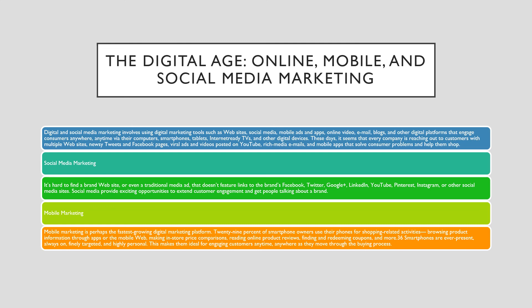Digital and social media marketing involves using digital marketing tools such as websites, social media, mobile ads and apps, online video, email, blogs, and other digital platforms that engage consumers anywhere, anytime via their computers, smartphones, tablets, TVs, and other digital devices. These days, it seems that every company is reaching out to customers with multiple websites, tweets, and Facebook pages, viral ads, videos posted on YouTube, rich media emails, and mobile apps that solve consumer problems and help them shop.